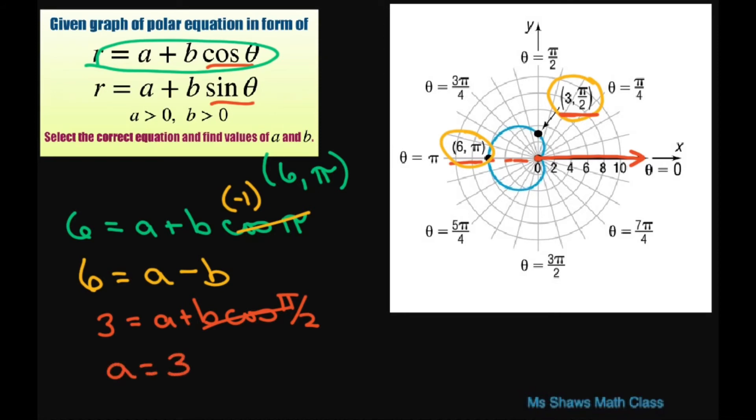Substituting it back into our first equation, we get 6 equals 3 minus B, or you can say that B is going to equal negative 3.